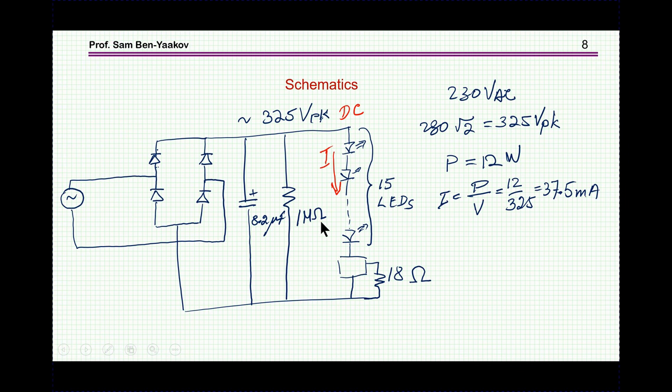So here is the schematics. What we see here is a very simple circuit. We have a rectifier, we have an 8.2 microfarad capacitor, so it's a capacitive filter type of rectification. One megaohm resistor which is apparently for bleeding of this capacitor. And then we have an array of LEDs, 15 LEDs, and this is the IC device, and here is the 18 ohm, the two 39 ohm resistors in parallel connected in series here.